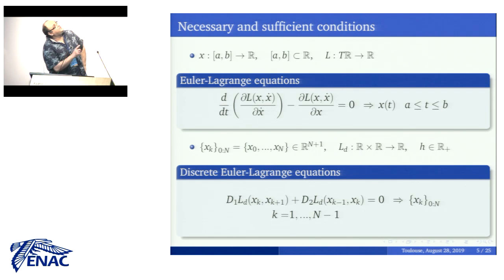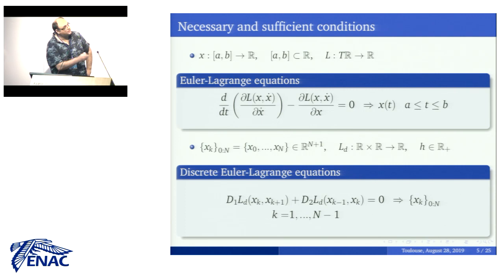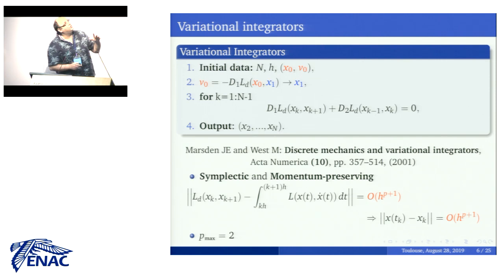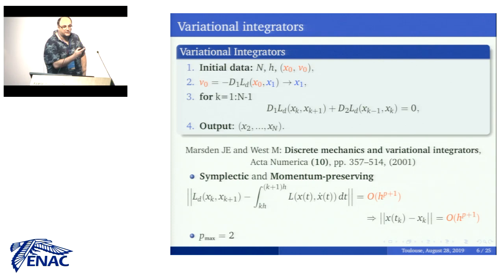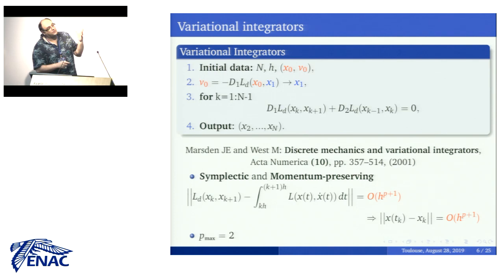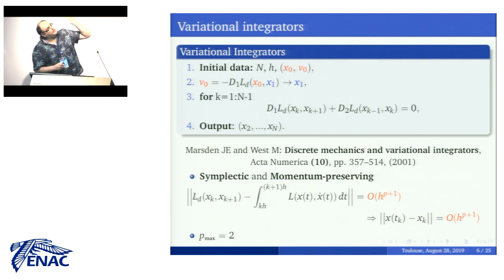These are necessary and sufficient conditions for the curves x and xk to be extremals of the action under variations. Naturally, xk will be an approximation of the continuous dynamics given by x(t). To obtain the sequence xk, we iterate using the discrete Euler-Lagrange equations for all k's, once we start the integrator, for which we need to determine x1. We can determine x1 using the discrete Legendre transformation. The initial data for Lagrangian systems are the zero configuration and zero velocity, so once we have x0 and x1, we can start the engine and we get the full sequence of xk's.